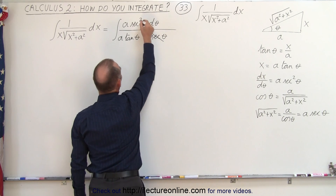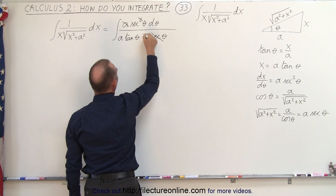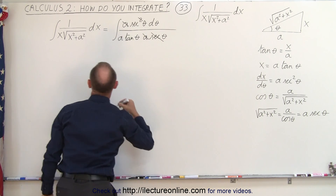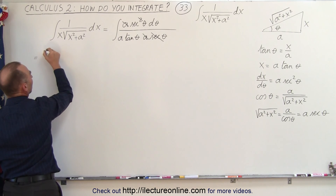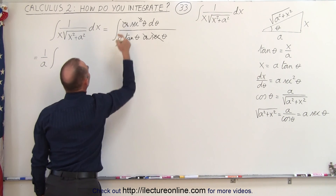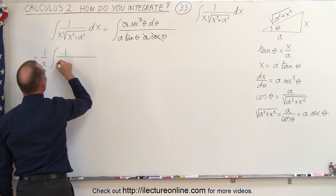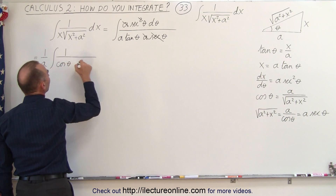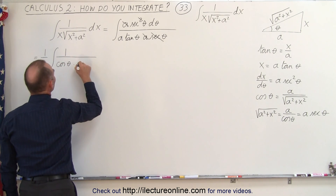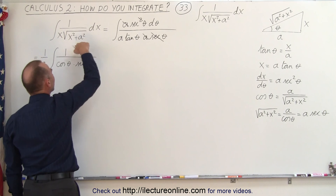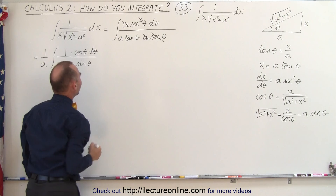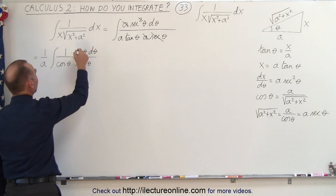Let's simplify as much as possible. We have the secant squared in the numerator, and we have an a and another a in the denominator. Let's rewrite: this is equal to 1 over a — taken outside the integral sign — times the integral of secant in the numerator, which is 1 over cosine of theta. In the denominator we have the tangent, which is sine of theta divided by cosine, and that can go to the numerator. The two cosines then cancel out.